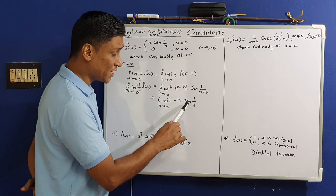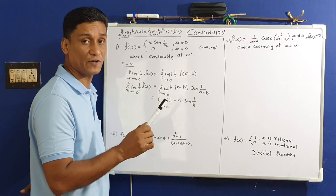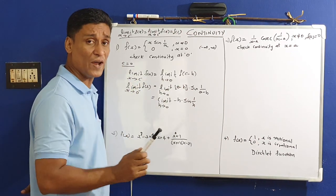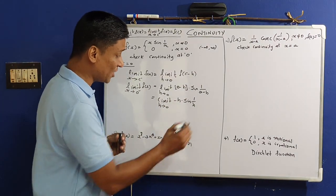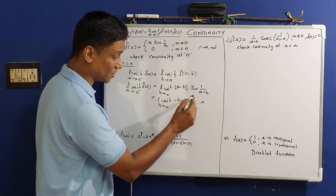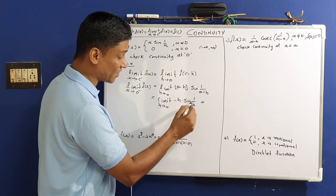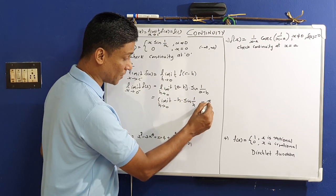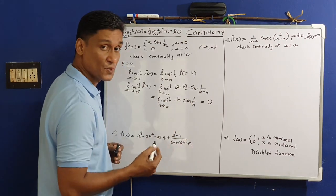We have limit h tends to 0 of minus h·sin(1/h). As h tends to 0, sin(1/h) goes to infinity — but the sine function is bounded; it is always between minus 1 and 1. So sin(1/h) has a maximum value of 1. Since sin(1/h) is bounded and h tends to 0, this product minus h·sin(1/h) automatically becomes 0. So the left-hand limit equals 0.